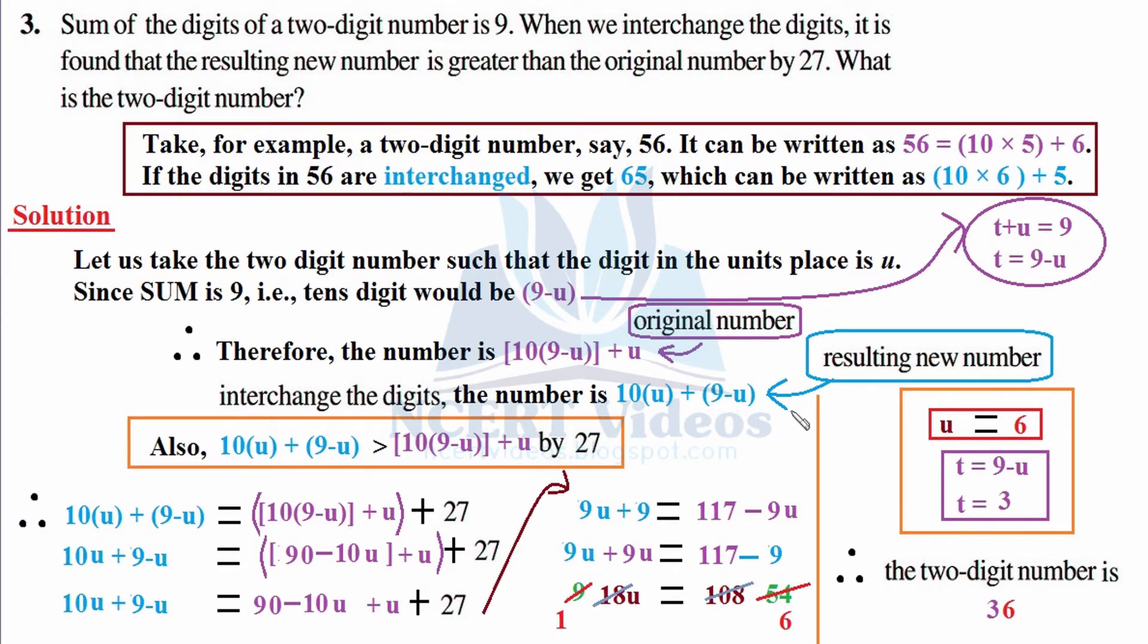In terms of mathematics, this resulting new number 10u + 9 - u is greater than the original number 10(9-u) + u by 27. Here, opening braces towards greater number, then the original number by 27.